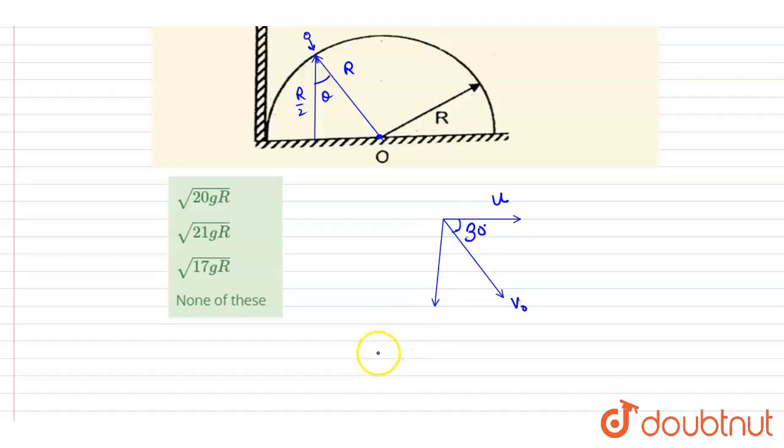So here the horizontal component will always remain constant, so I will write down v naught equals, if you see, u by cos 30. We can see here since v naught cos 30 is u.